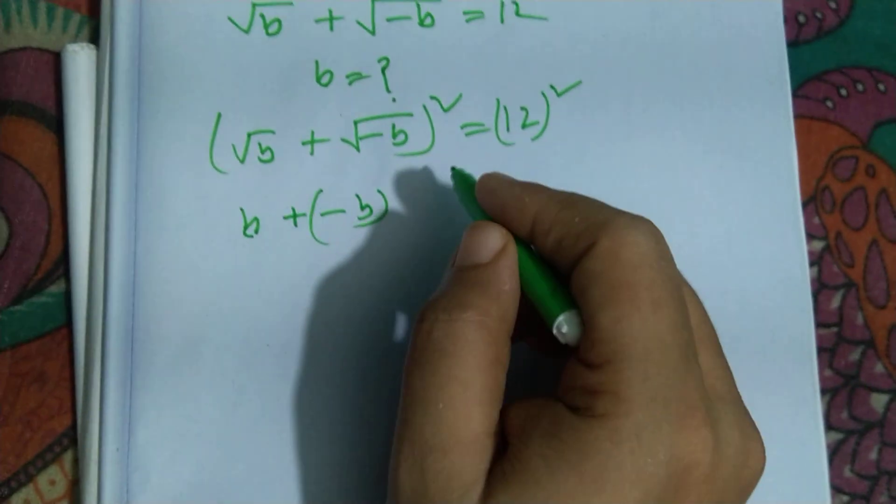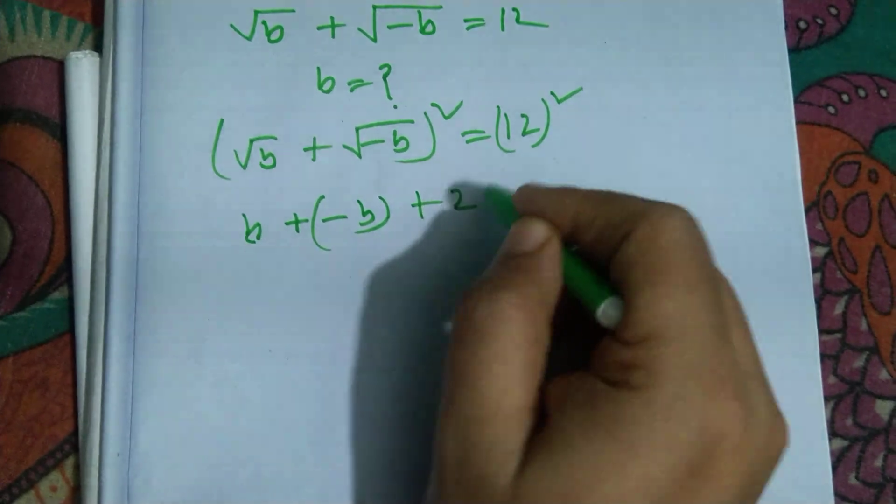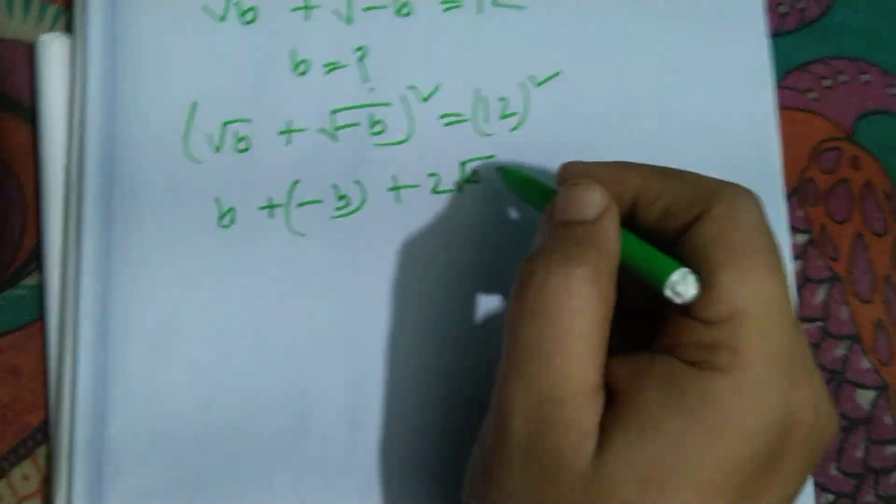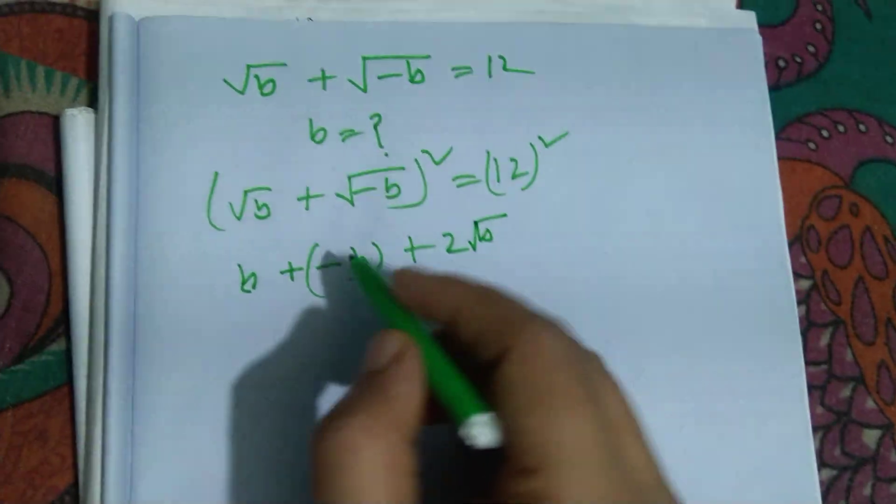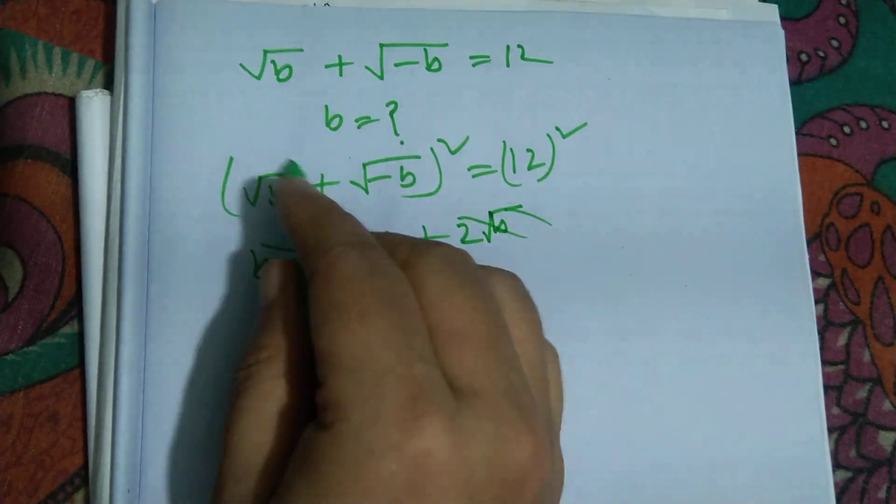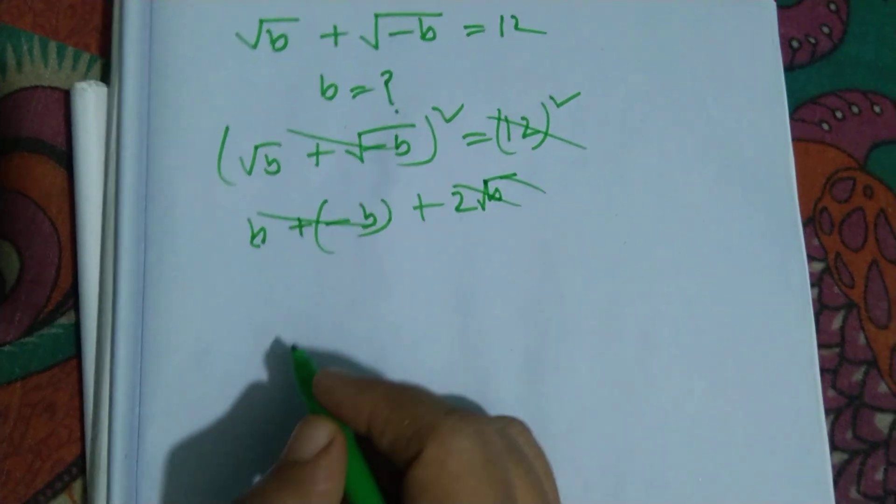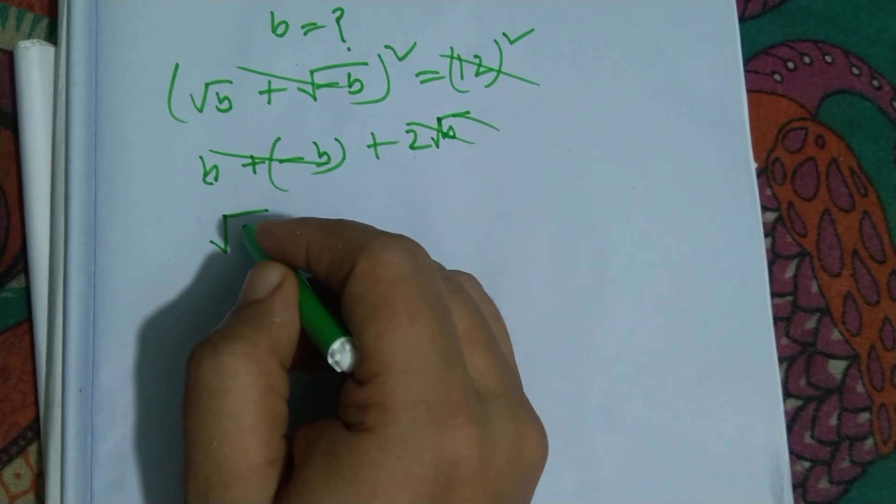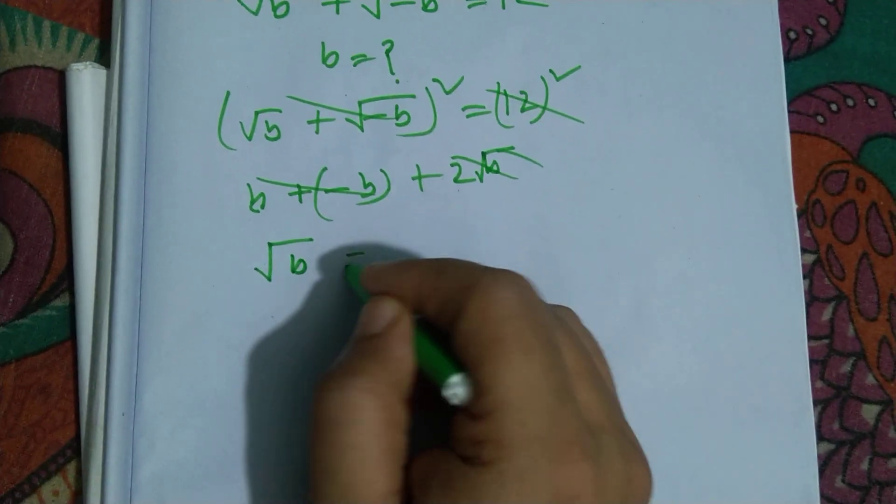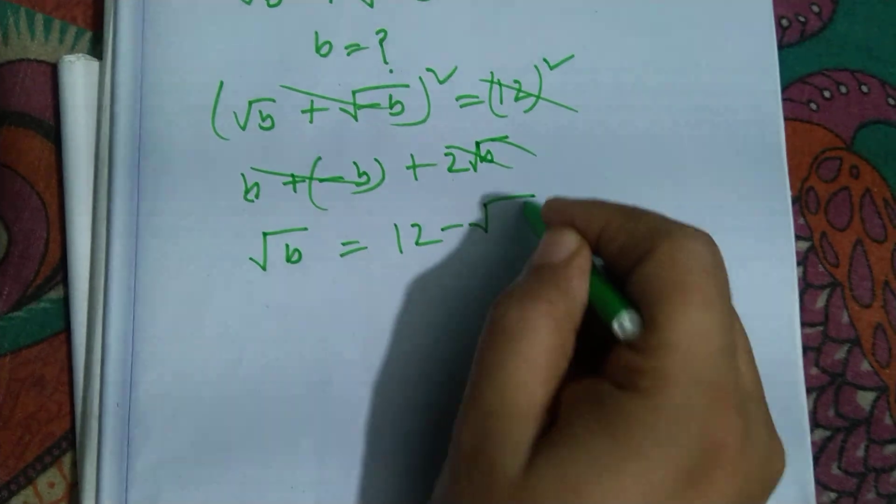Because A squared minus B squared formula, plus 2 into B root over B. Okay, not this way. So root over B, root over B is equal to 12 minus root over minus B.